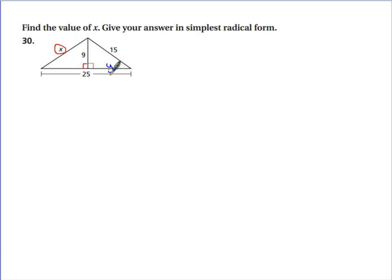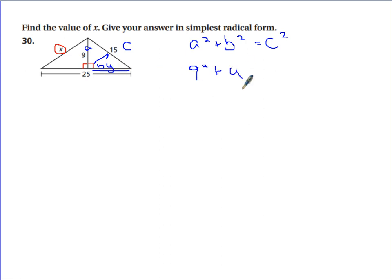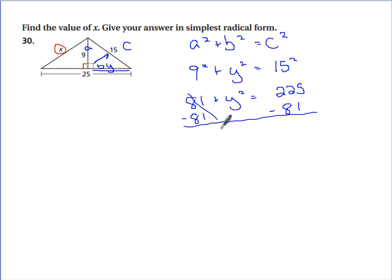Let's call this little part right here Y. I can figure out Y because across from the right angle that's C, and the other sides are A and B. So A squared plus B squared equals C squared: 9 squared plus Y squared equals 15 squared. So 81 plus Y squared equals 225. Subtract 81 from both sides — Y squared equals 144. Take the square root on both sides.